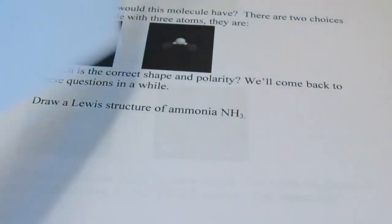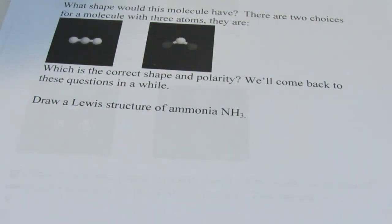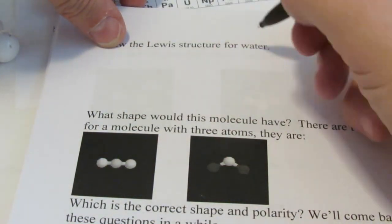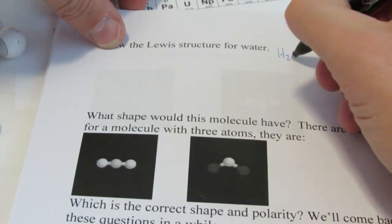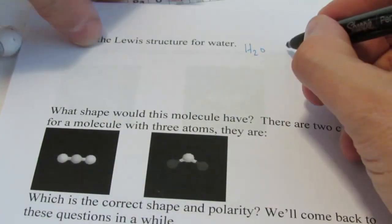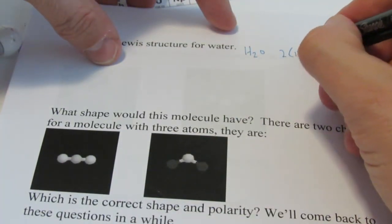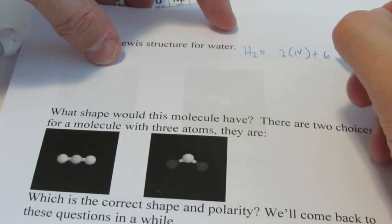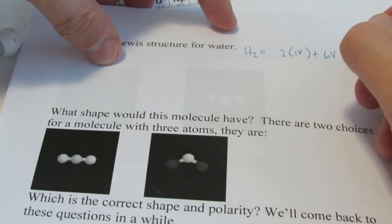Alrighty, so let's take a look here. Let's draw the Lewis structure again for water. I know you've done this a couple times. Let's do it. Oh, what the heck. Just one more time. And so water, of course, is H2O. We have two hydrogens. Each has one valence electron and oxygen has six valence electrons. So we have a total of eight.